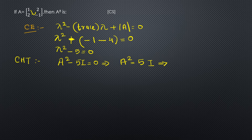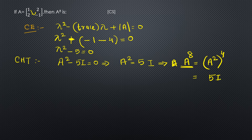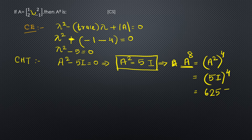To find A raised to 8, we write it as (A squared) raised to 4. Since A squared equals 5I, this becomes (5I) raised to 4, which is 5 to the 4th power times I to the 4th. That is 625 times I, so the answer is 625I.